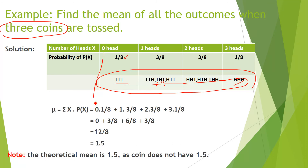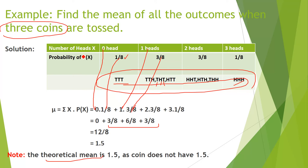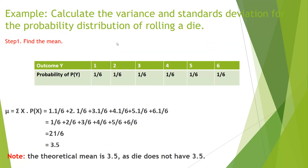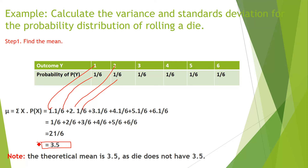Another example of the mean using a die: there are six outcomes, 1 through 6, each with a probability of 1/6. You write down each outcome, multiply by its probability, and add all the results. The mean comes out to 3.5, which is again a theoretical mean since a die does not actually have the value 3.5.